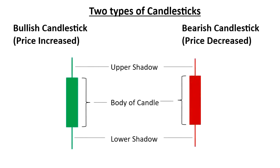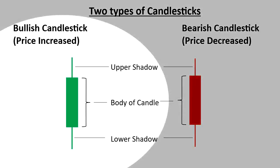Now based upon the price action, two types of candlesticks are formed. We have the bullish candlestick, which you see here on the left in green, and you have the bearish candlestick, which is on the right in red. Now let's break down the anatomy of these two types of candlesticks. Starting with the bullish candlestick on the left — the green candlestick — we can see it has the same basic parts: the upper shadow, the body of the candle, and the lower shadow.